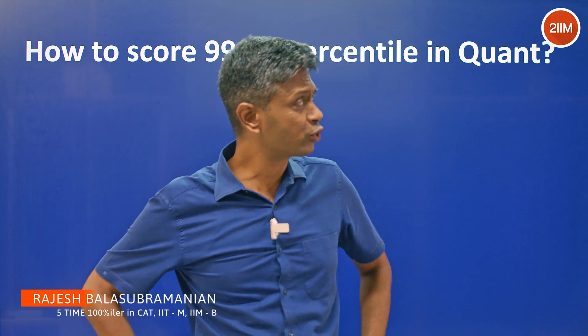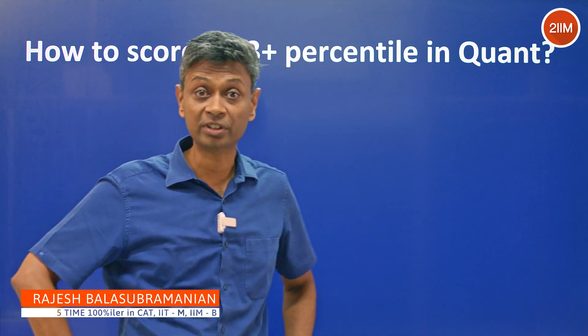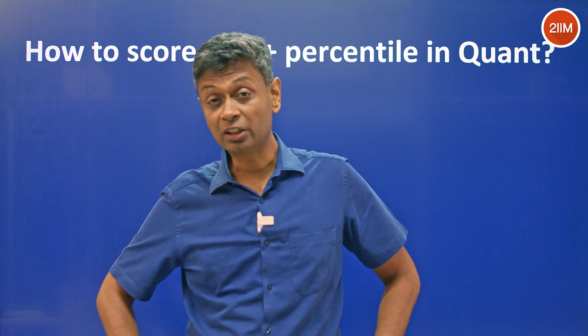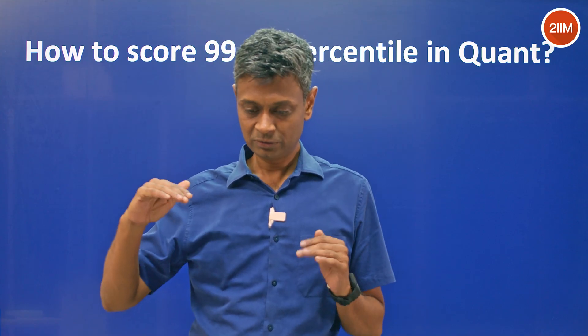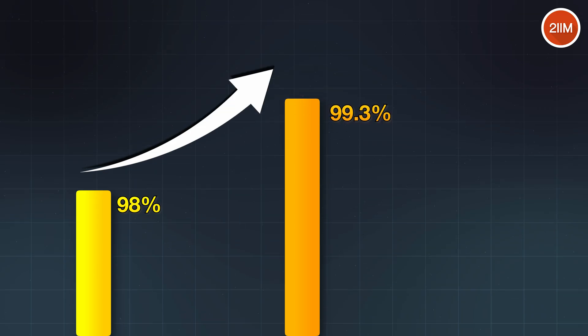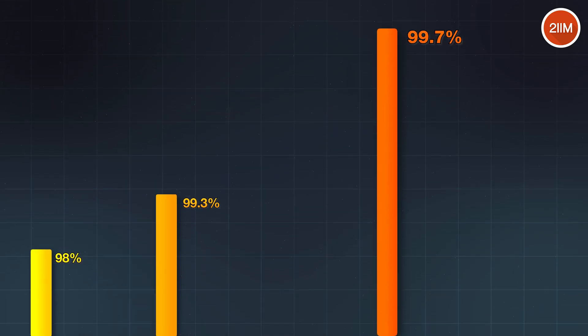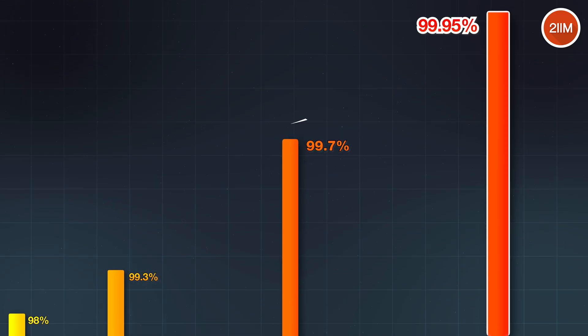Hello folks! How should one score 99.3 percentile in quant? 99.3 percentile is a fantastic score and also a tough score. To start with percentile numbers, from 98 to 99.3 is a big journey, 99.3 to 99.7 is a big journey, and 99.7 to 99.95 is a huge, tougher journey.